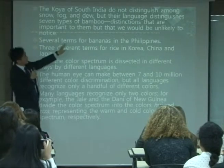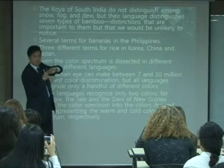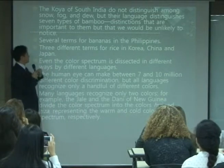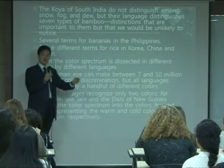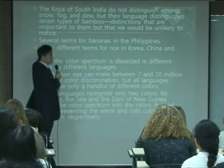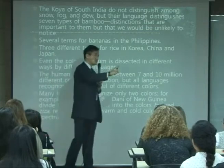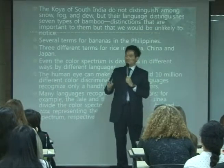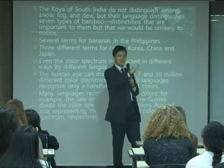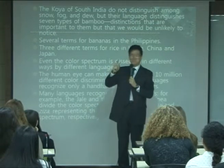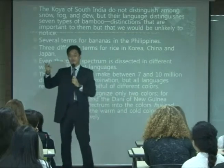In Koya of South India, they do not distinguish among snow, fog, and dew, but their language distinguishes seven types of bamboo. For Filipinos there are several terms for bananas. For Koreans, Chinese, and Japanese there are three different words for rice. In English there's only one word — rice — because they're bread eaters. We have 'byeo' (rice in the field), 'ssal' (harvested, uncooked rice), and 'bap' (cooked rice). We have three different terms because we love rice.